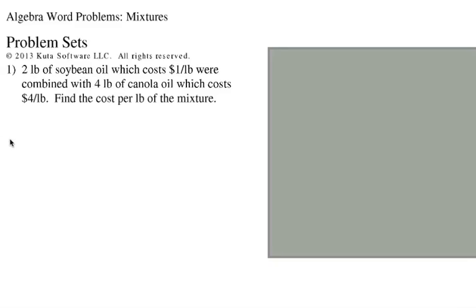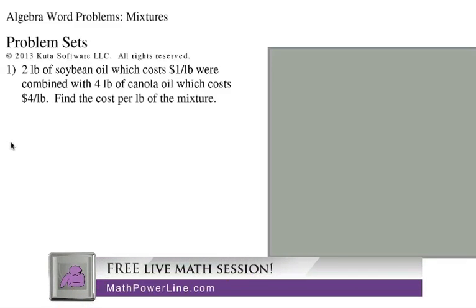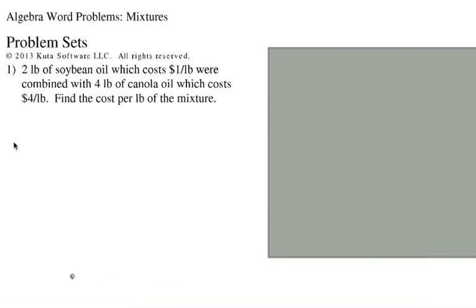Let's start with number one. It says two pounds of soybean oil, which costs $1 per pound, was combined with four pounds of canola oil, and that costs $4 per pound. Find the cost per pound of the mixture. Remember there's two things we've got to figure out here. We need to figure out the costs, and we need to figure out the amounts.